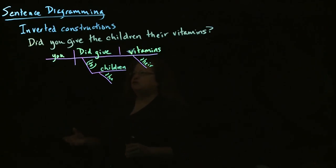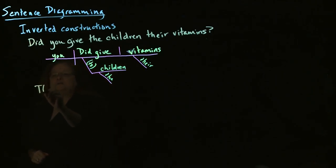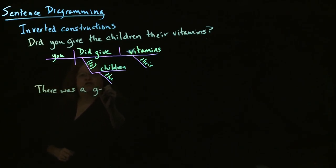Another kind of inverted construction is something called an expletive, where you've got an adverb at the beginning that's sort of taking the place or setting up the sentence. The subject is way off at the back end of the sentence a lot of times. So we may have: There was a general start.